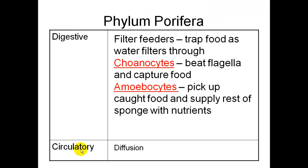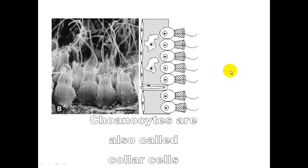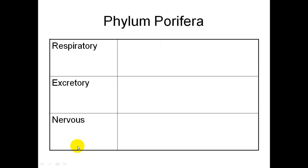They don't have a circulatory system; they do everything through diffusion. Here are your choanocytes — also called collar cells. You can see the flagella, and these are the ones that will capture the food. Here's a real picture of them as well.